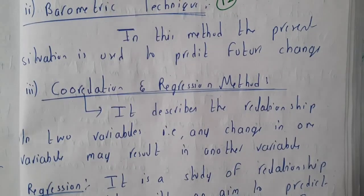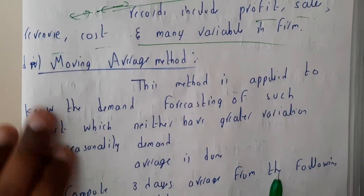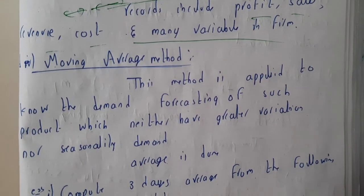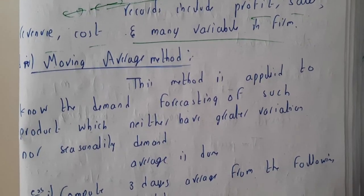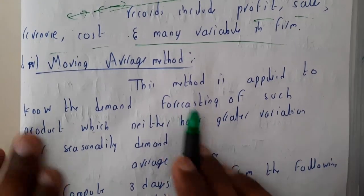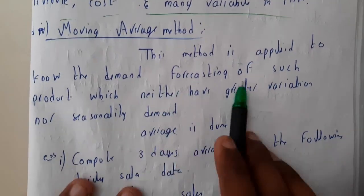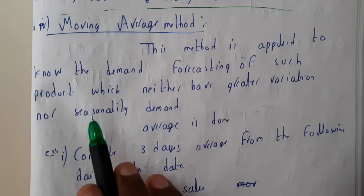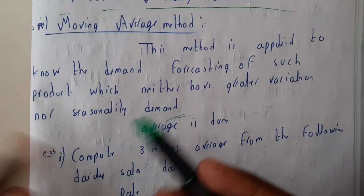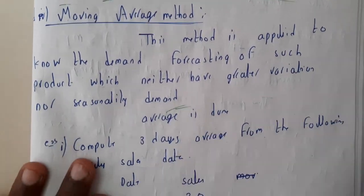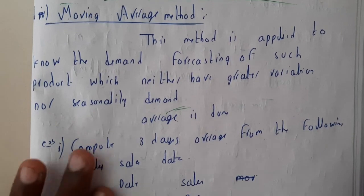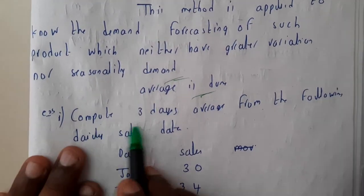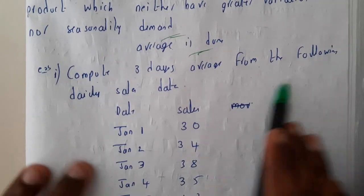The next method is the moving average method — it is a simple method with a small trick. This method is applicable to know the demand forecasting of a product which has neither great variation nor secondary demand. It is a normally demanded product, so an average is computed.